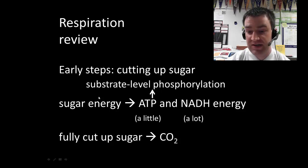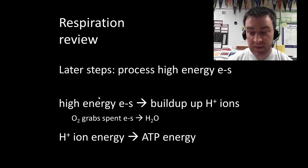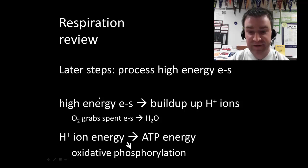Remember what happened to that sugar? It was fully cut up. Later steps involved using those high-energy electrons to make ATP. That involved two steps. First the high-energy electrons helped pump H+ ions to one side. And then those H+ ions flowed through ATP synthase to phosphorylate ADP. When you're making ATP this way we called it oxidative phosphorylation of ADP.